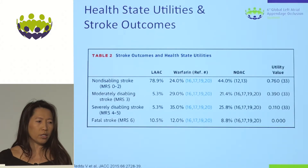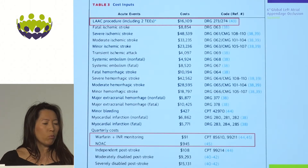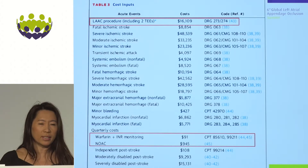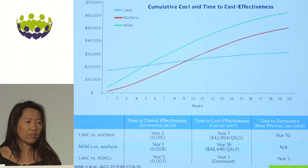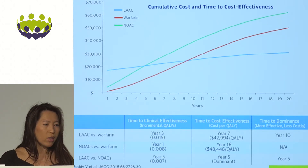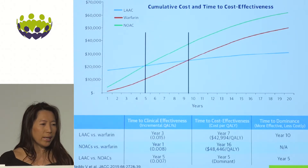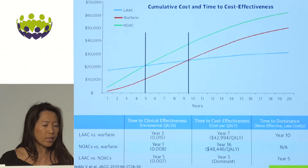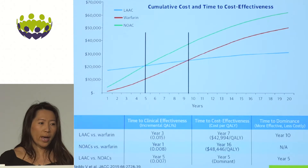For disabling stroke distribution with LA closure, moderate-to-severe disability was about 10%, whereas with NOAC therapy it was about 45%. The cost of LA closure in the US was about $16,000 based on the new DRG code, and for NOACs it was $900 per quarter — about $3,600 per year. Looking at time to cost-effectiveness, the initial cost up front is high with LA closure due to procedural costs, but by five years the LA closure cost line crosses the NOAC line, and by ten years it crosses the warfarin line. LA closure became cost-effective compared to warfarin by year seven, and actually dominates warfarin at year ten. LA closure dominates NOAC by five years.